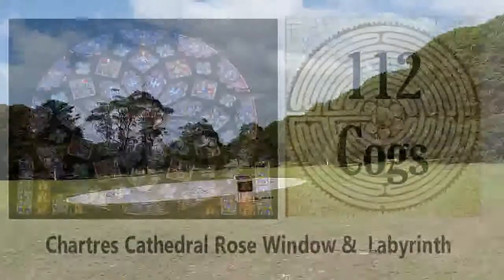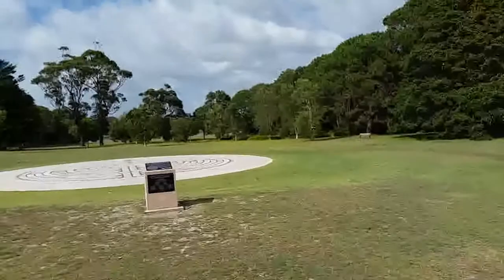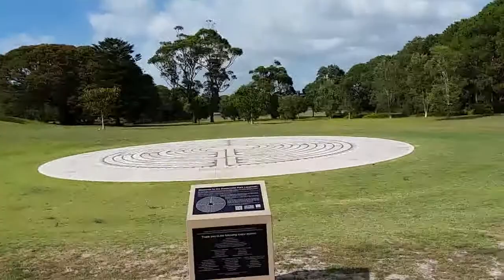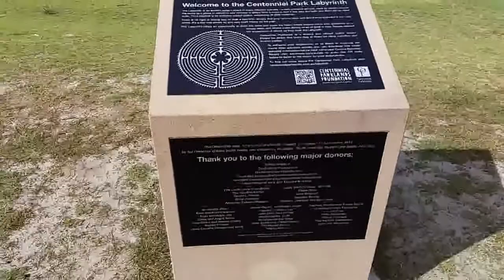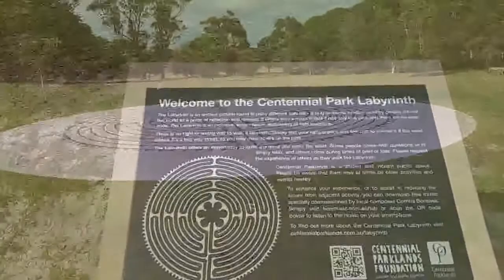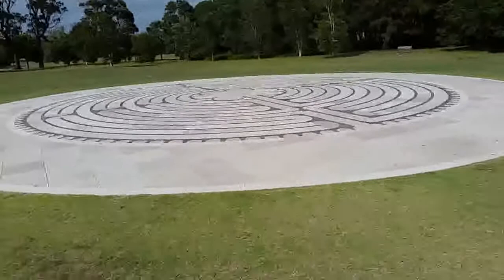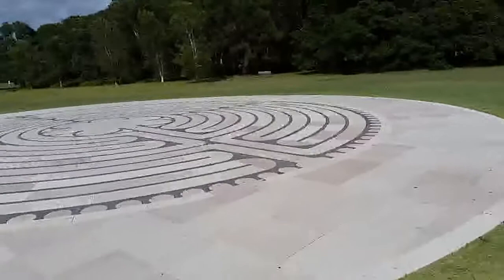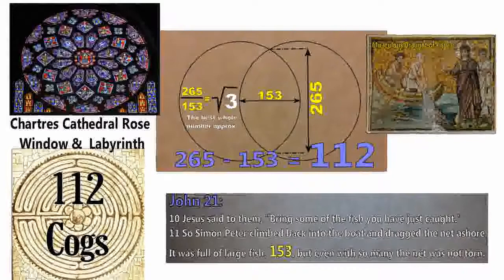The rose wheel at Chartres has 112 cogs, and it's actually the same size as the labyrinth on the floor — if you were to drop the wall down, the stained glass would fit onto the labyrinth. A maze differs from a labyrinth: a labyrinth, like the one at Chartres, has one entrance and one exit and you cannot get lost — you simply follow the path through. It functions as a meditation tool. There's one in Centennial Park in Sydney and another next to Westmead Hospital, and quite a few around the world.